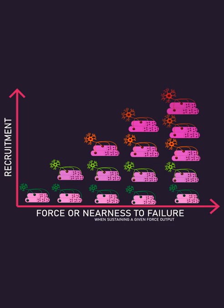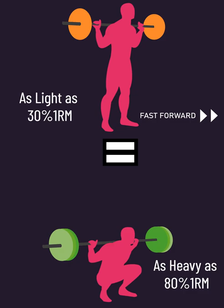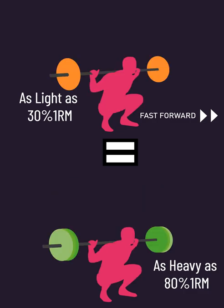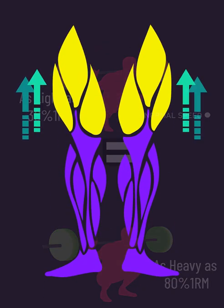This is one reason why when performing reps to failure, light and heavy loads stimulate nearly all the muscle fibers within a muscle and go on to produce similar muscle growth.